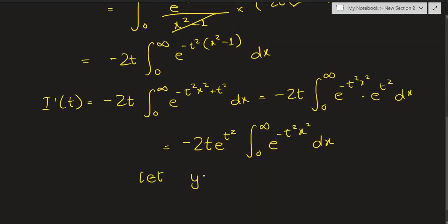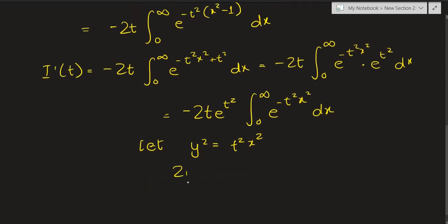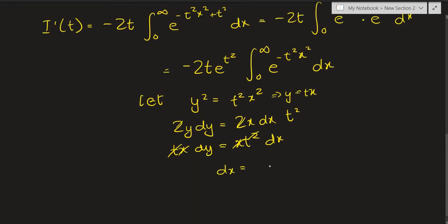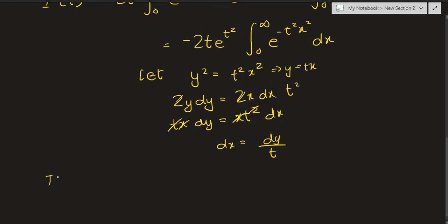Now I make a quick substitution: let y squared equal t squared x squared in the exponent. Differentiating both sides, 2y dy equals 2t squared x dx, and the 2s cancel. From this we know y is tx, so taking the square root gives y equals tx. Then dx becomes dy over t.